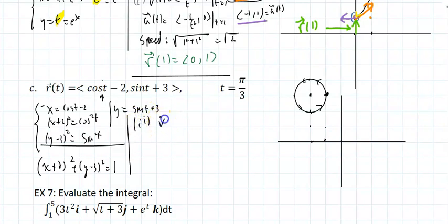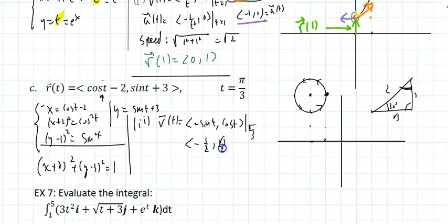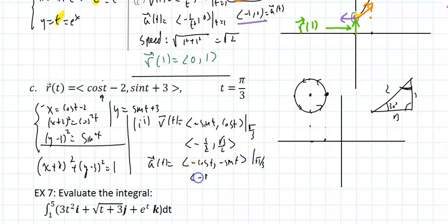The velocity function is v(t) = (−sin t, cos t), evaluated at t=π/3 (60 degrees): sin(60°) = 1/2, cos(60°) = √3/2, so v(π/3) = (−1/2, √3/2). The acceleration is (−cos t, −sin t), evaluated at π/3: a(π/3) = (−√3/2, −1/2).